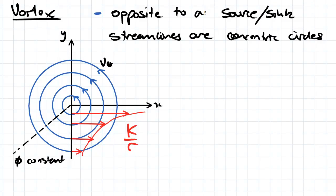So instead of having our streamlines being radial, we've actually got our streamlines being the concentric circles flowing around a central point.